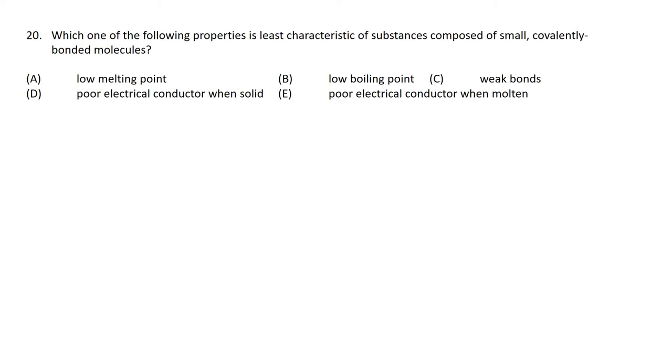Which one of the following properties is least characteristic of substances composed of small covalently bonded molecules? Well, small covalently bonded molecules have weak IMFs, which means they have low melting points and low boiling points. The molecules can't float around carrying charge.